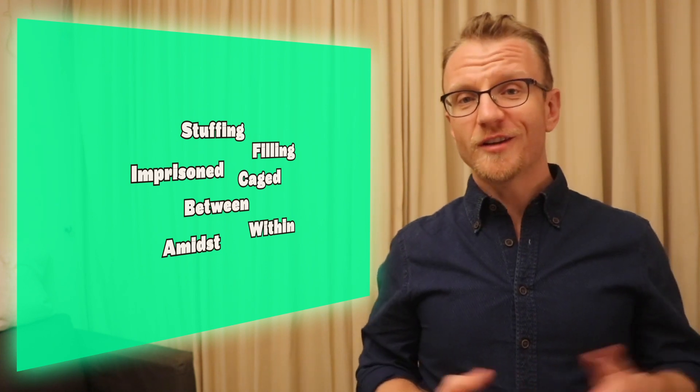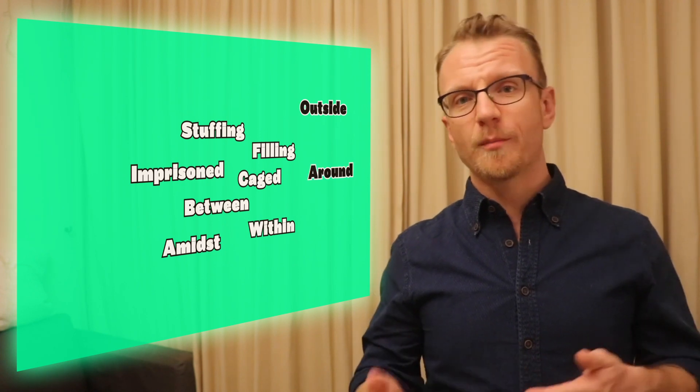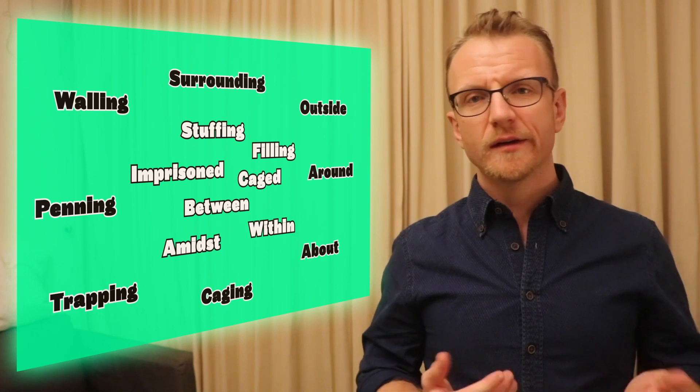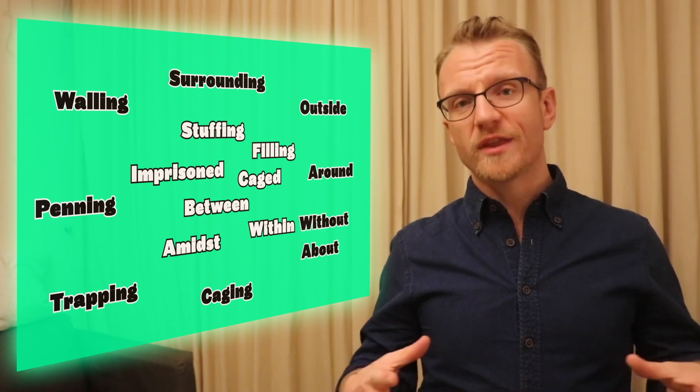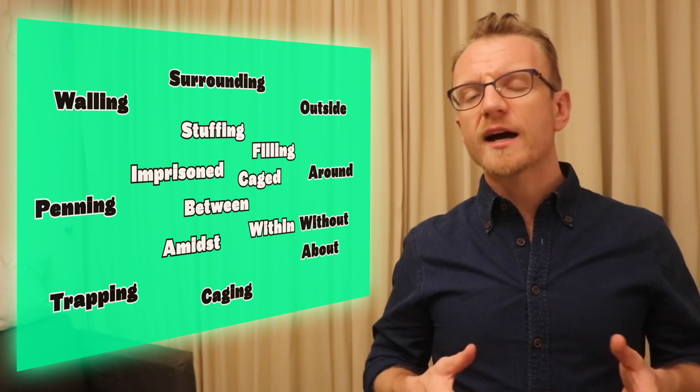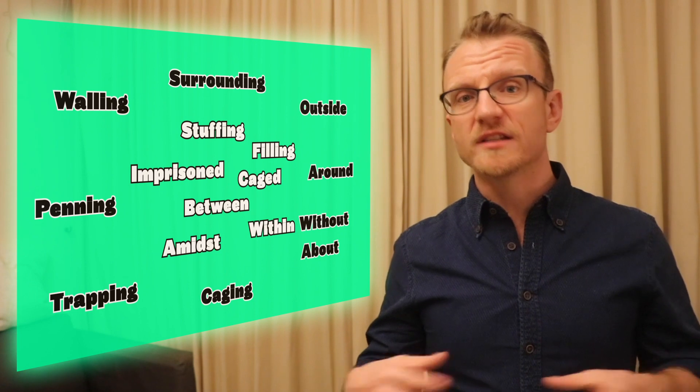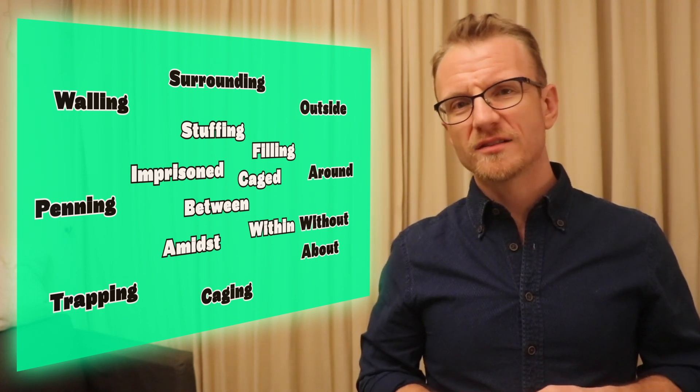Also the opposite, of course - anything suggesting one thing going on the outside of another. So around, about, caging, trapping, penning, walling, surrounding, anything. And for this one you can have the converse of sty without even. Without can mean both lacking something and also being on the outside of something, as in the opposite of within. Without. English sucks.